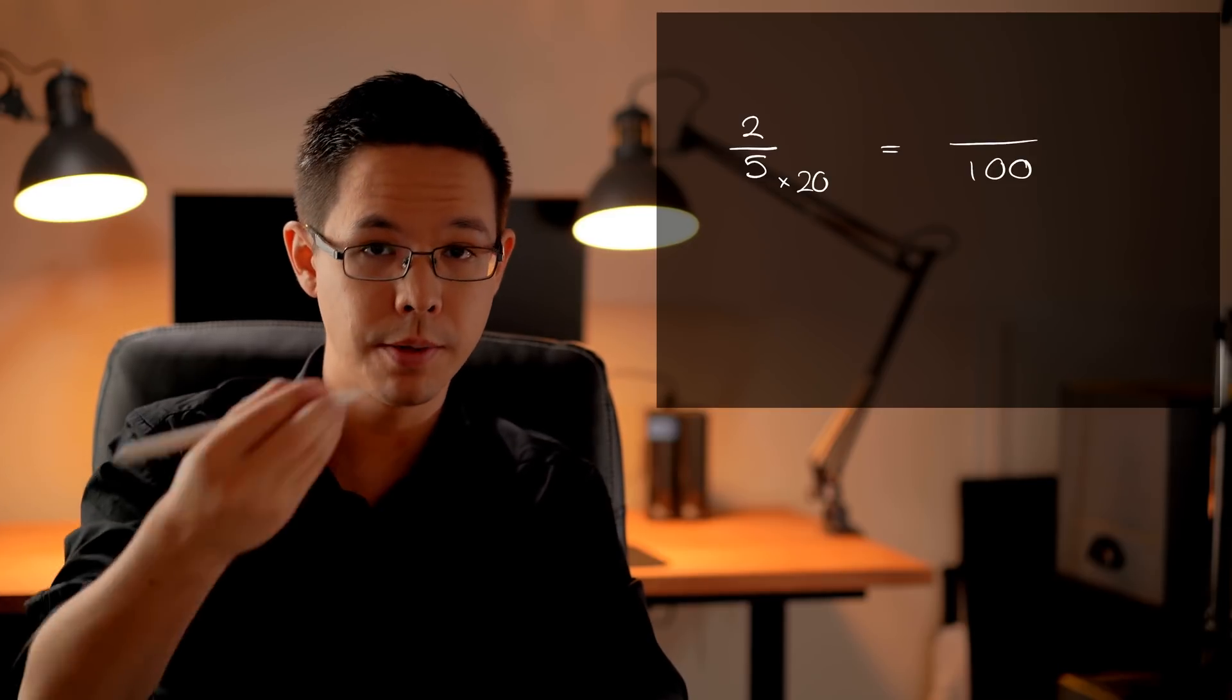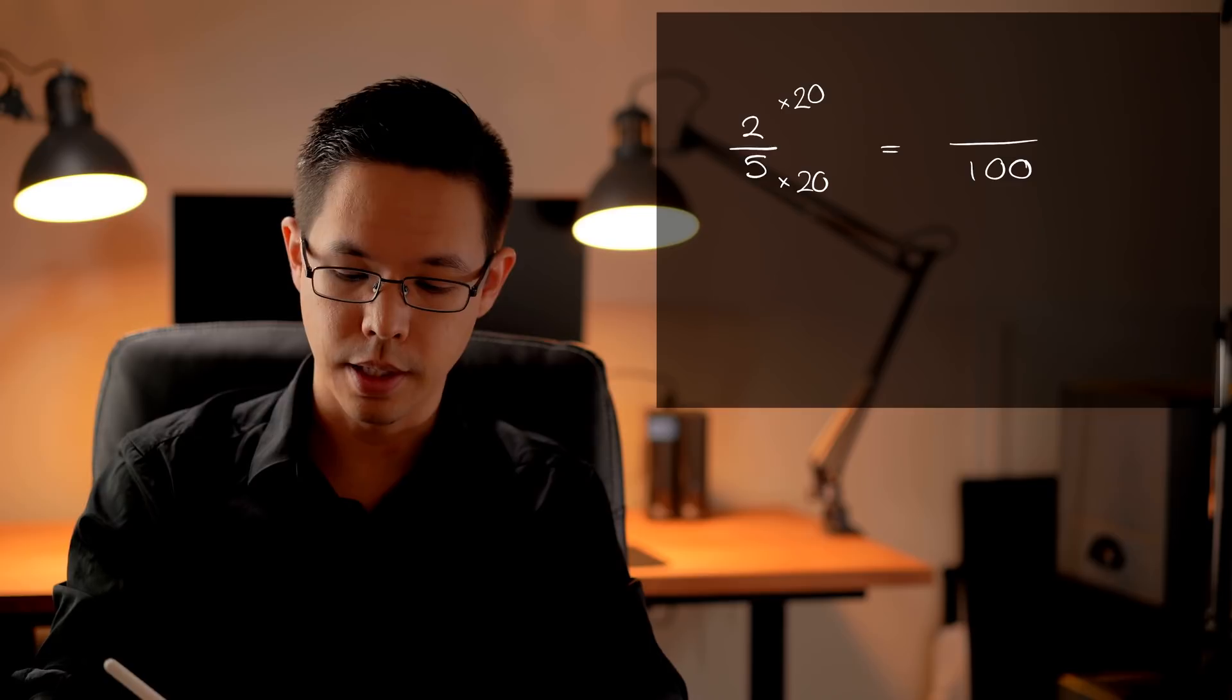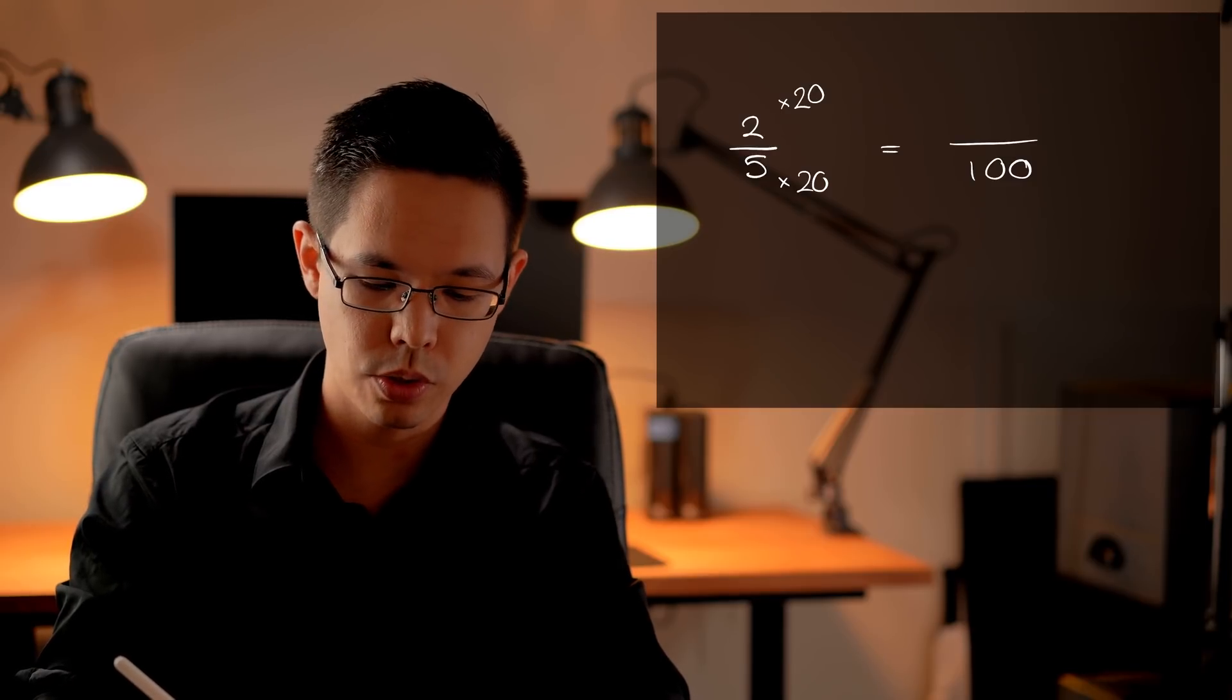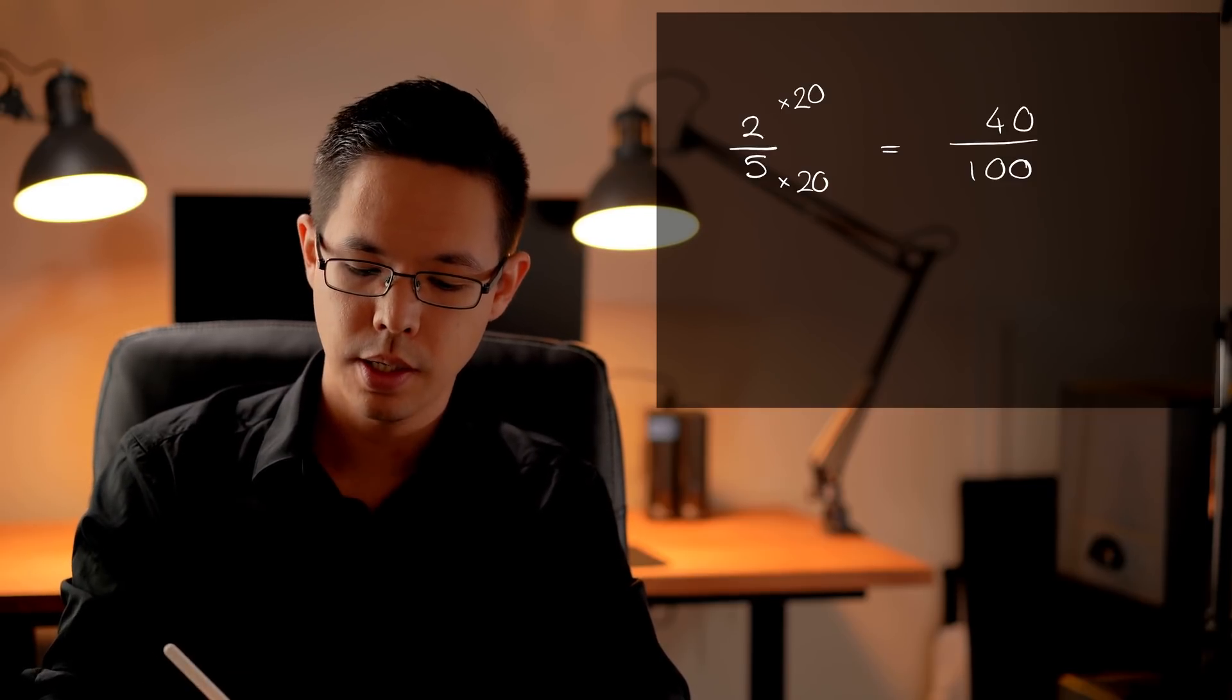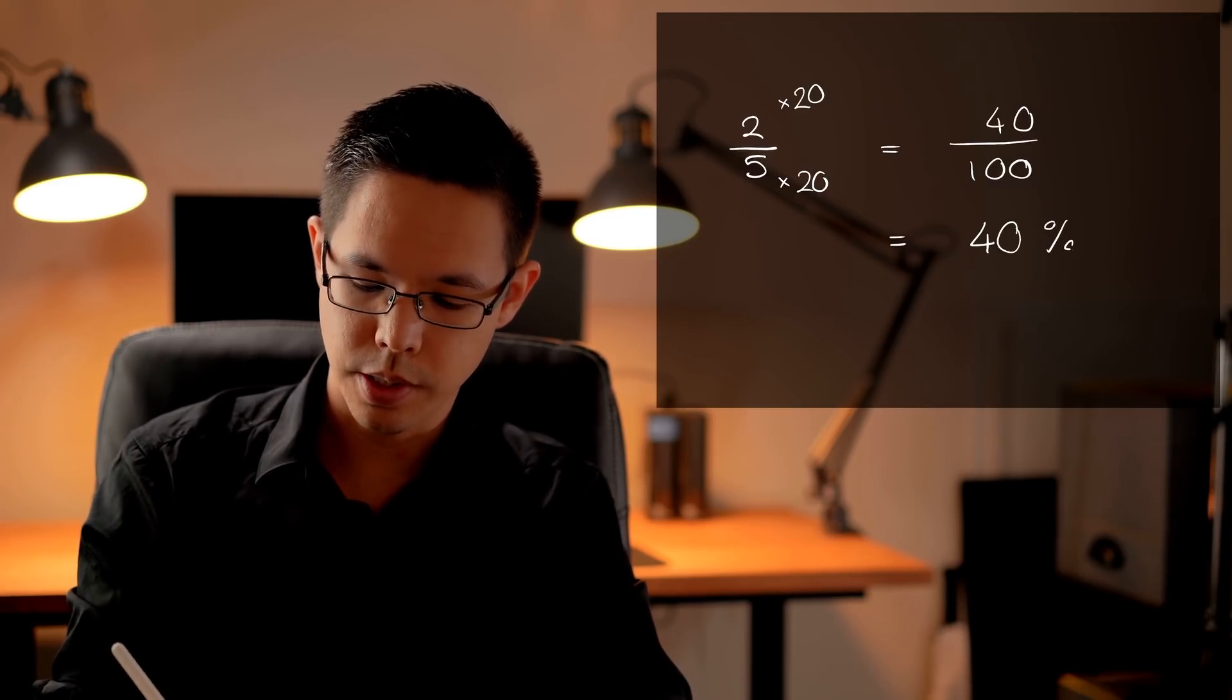So here we go 5 can easily be scaled up to 100 by multiplying it by 20. 5 times 20 gives me 100. If I do the same top and bottom multiplying by 20 I can also get an equivalent fraction. So here we go 2 times 20 gives me 40. So two-fifths as a percentage is 40 percent.